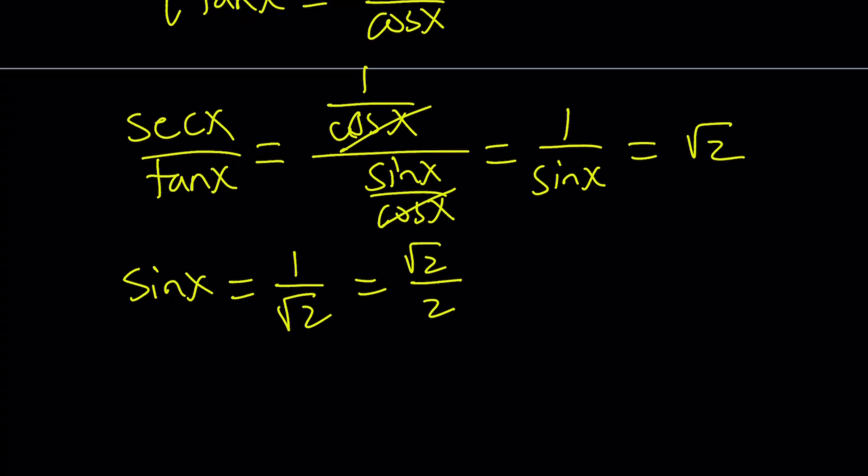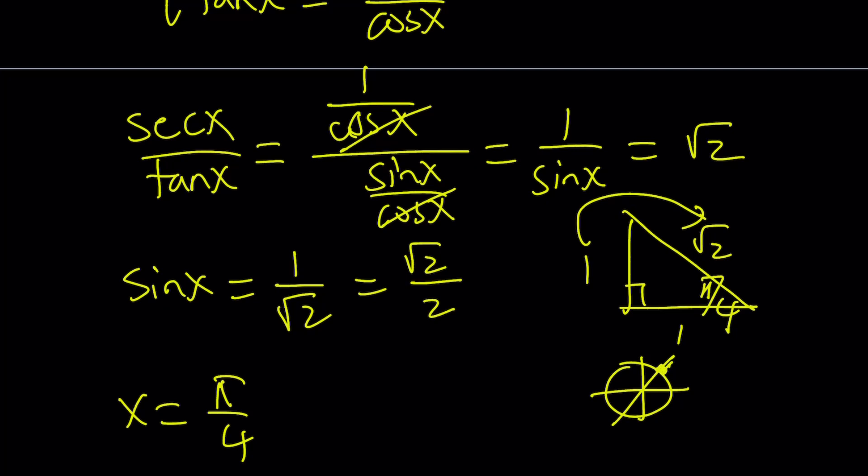So when is sine root 2 over 2? When you think about an isosceles right triangle, this is pi over 4, this is 1, 1 root 2. So yes, the sine is 1 over root 2 if x is pi over 4. So pi over 4 is one of the solutions, but again, because of tangent reasons, you can add pi to it, because they're going to be on the same line.